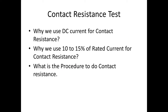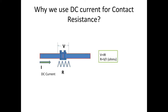Why is the contact resistance measured on DC? We will talk about 10–15% of rated current. First, we will talk about DC current. For AC, we will talk about the contact resistance. For AC, we will talk about the inductance value of the current circuit.